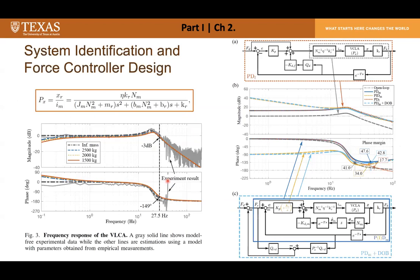We identified actuator dynamics through system identification in the frequency domain and built four different force feedback controllers. The first is a basic PD controller using force error and its derivative. The second uses force error and motor velocity instead of the force error derivative. We consider two variations: adding an integral controller, and adding a disturbance observer. We showed the second force controller is more robust to time delay because motor velocity from the quadrature encoder is much cleaner than force error derivative signals.